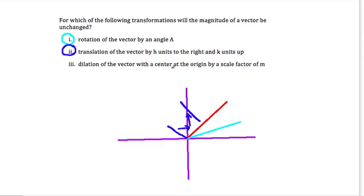Next, we have a translation of the vector by H units to the right and K units up. So if I have this blue line right here, well, if I shift it to the right this way, and then up this way, I'll just get the same line over here. So that leaves the line intact. But dilating a vector with a center of the origin and scale factor of M, that's going to change the length of the line. Stuck at the origin, say my length here is 4. If I double that, I'm changing the magnitude to 8. So 3 is not an option. So only 1 and 2 will leave the vector unchanged.